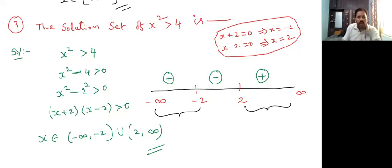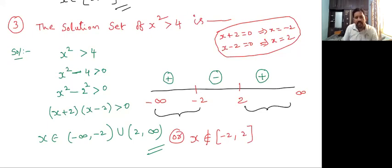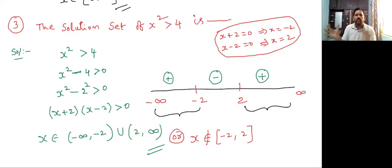Or we can write it another way: x does not belong to closed interval [minus two, two], meaning x values less than minus two and more than two. X does not lie between minus two and two. That is also a correct answer.